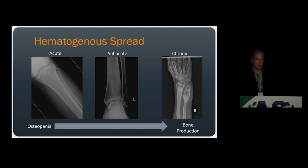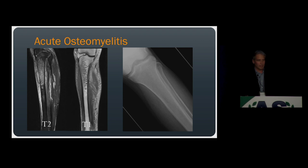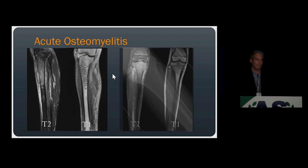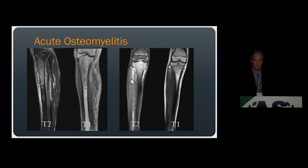Just like direct spread osteomyelitis, acute hematogenous osteomyelitis shows bone demineralization at an early stage that can be very subtle and radiographically occult. MRI is very helpful here. It appears similar to direct spread osteomyelitis, exhibiting increased signal on fluid-sensitive sequences with decreased signal on T1 sequences. However, the concept of reactive marrow changes does not apply to hematogenous osteomyelitis. So when a patient presents with concern for hematogenous osteomyelitis and you see areas of increased signal on the fluid-sensitive sequence, that is consistent with osteomyelitis, even in the absence of confluent loss of T1 fat signal.